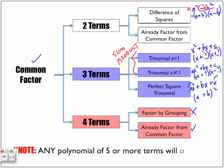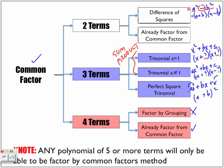Anything beyond four terms, any polynomial of five or more terms will only be able to be factored by common factors methods. So by trying to identify what are the common variables, numerical terms that can be removed from each and every single term in your polynomial.